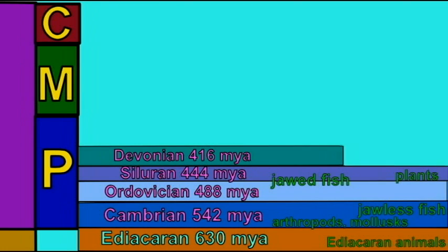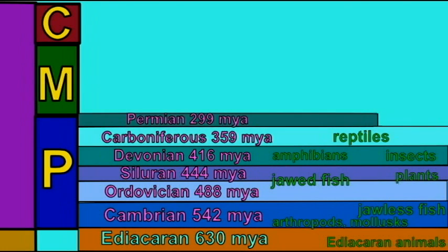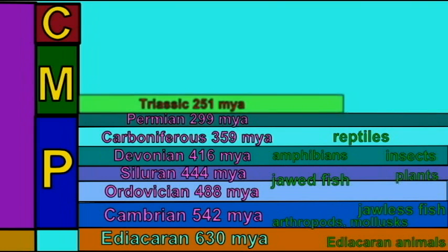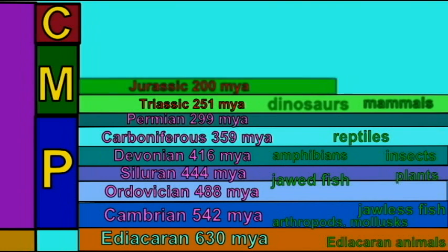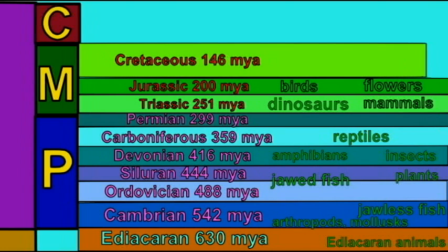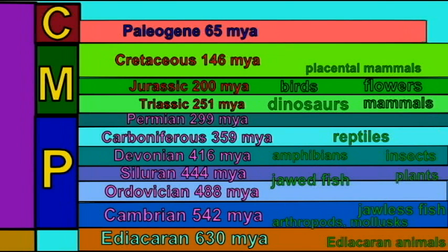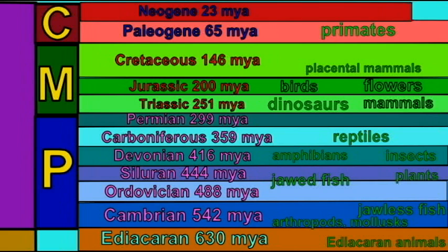The Carboniferous period sees the first reptiles. And the Permian follows. The end of the Permian is marked by the worst mass extinction in Earth's history, when more than 90% of life dies out, ending the Paleozoic era.